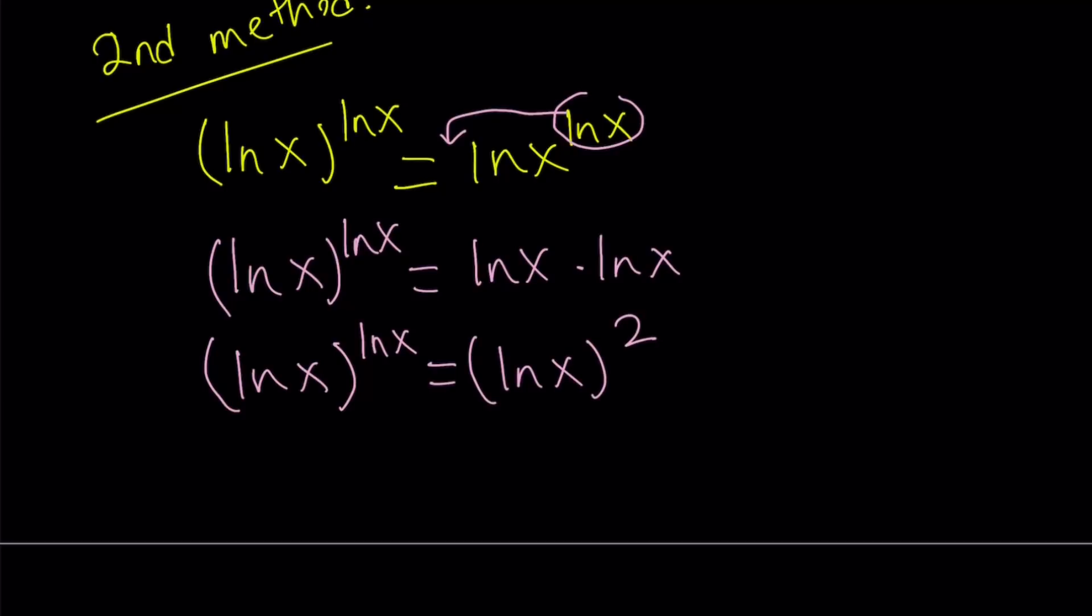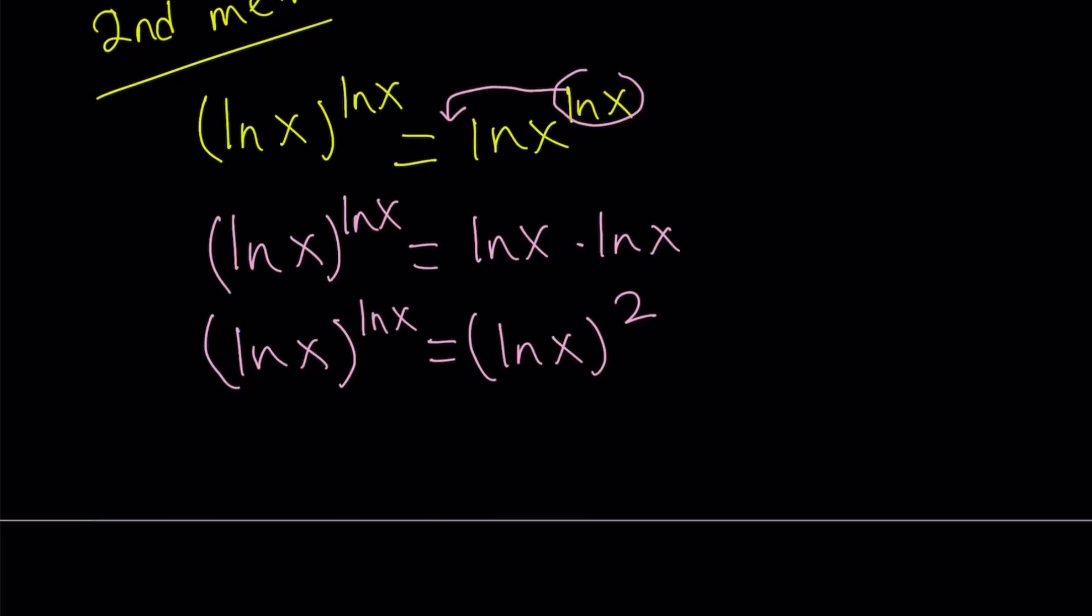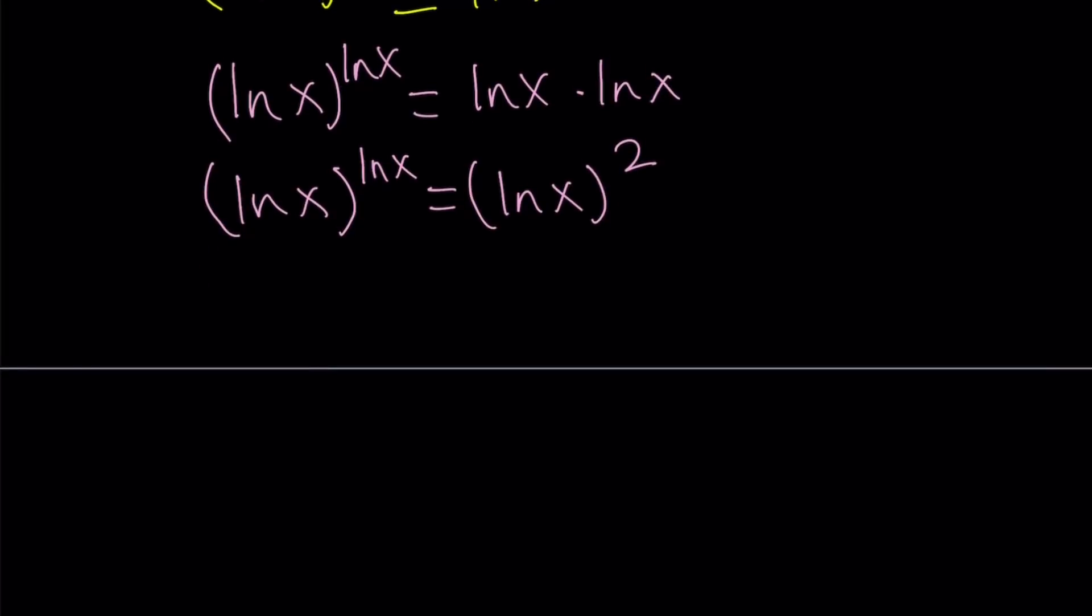Awesome. Now, notice that ln x squared is greater or equal to zero, right? Because when you square something, it's not going to be negative. So we can kind of do the following. There are two ways to go about it at this point. But I'm just going to divide both sides by ln x quantity squared. ln x to the power ln x divided by ln x to the second power. So I can just subtract the exponents and set this equal to one.